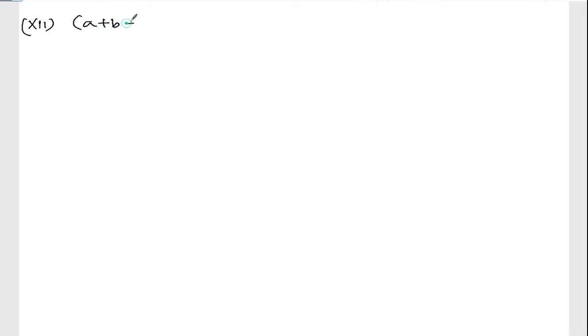Now we are doing exercise 3.1, question number 2, roman number 12. The question is: (a + b + c) times (bc + ca + ab).